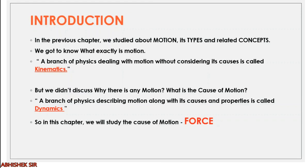A branch of physics dealing with motion without considering its causes is called kinematics. What we studied in Chapter 8 was kinematics. But in that chapter we didn't discuss why there is motion — what is the real cause of motion. For example, in acceleration, there is a change in velocity, but we didn't study why or how there is a change in velocity. These are the things we are going to study in this chapter.